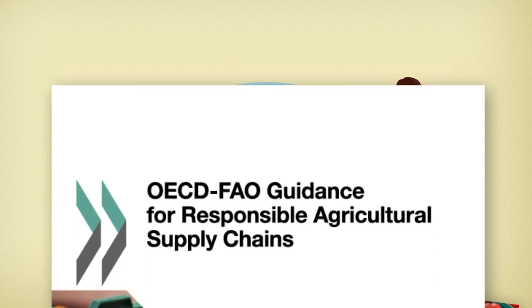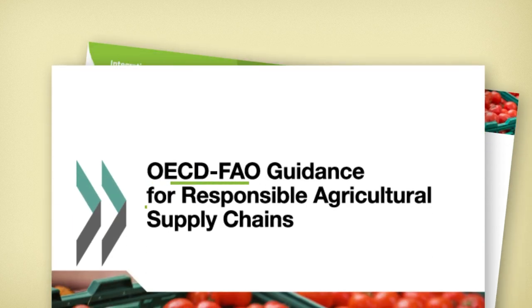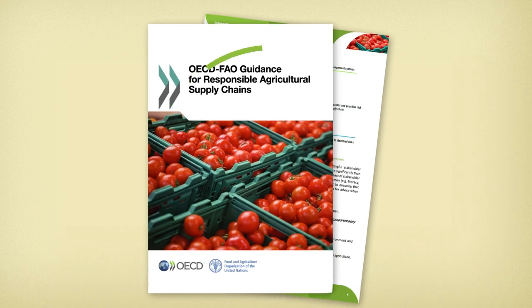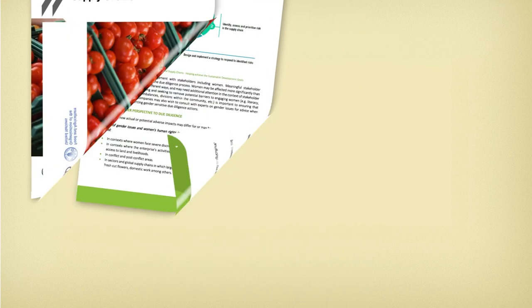Businesses in the agricultural sector have an important role to play in addressing these issues. The OECD-FAO guidance for responsible agricultural supply chains is the global standard for responsible business conduct in the agricultural sector.